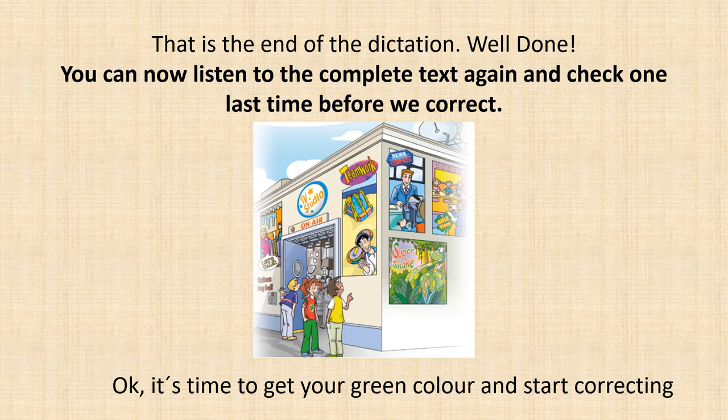Well done. You can now listen to the complete text again and check one last time before we correct. Did you watch a cartoon yesterday? Yes, I did. I painted a picture yesterday. We didn't watch TV last week. What did Lily do yesterday morning? She planted seeds. She didn't like watching cartoons. She liked watching films. They climbed a tree last night.